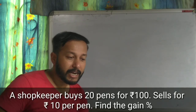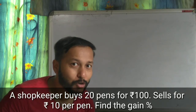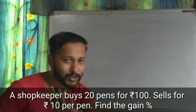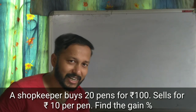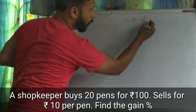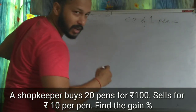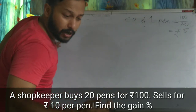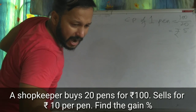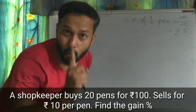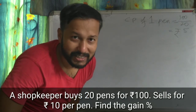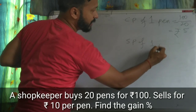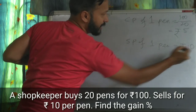Question number four: a shopkeeper buys 20 pens for rupees 100. Cost price of one pen equals 100 by 20, which is rupees 5. He sells them at the rate of rupees 10 per pen, so selling price of one pen is rupees 10.